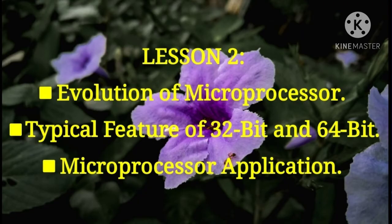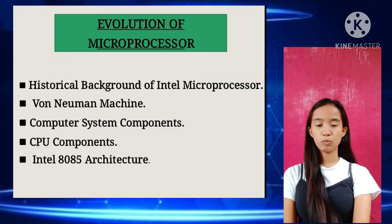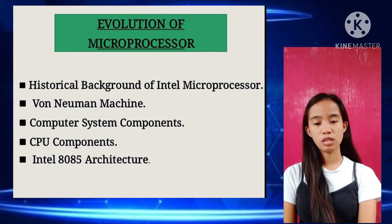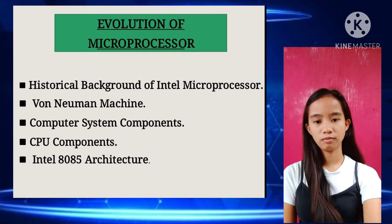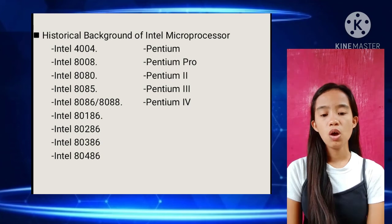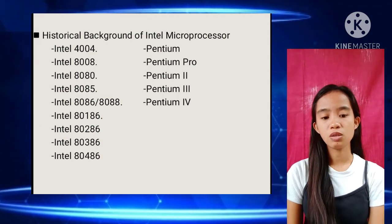Now let's proceed to Lesson 2, whose topics are: Evolution of Microprocessors, the 32-bit and 64-bit processors, and Microprocessor Applications. For the evolution of microprocessors, it talks about the historical background of Intel microprocessors, the Von Neumann machine, computer system components, and the Intel 8085 architecture.